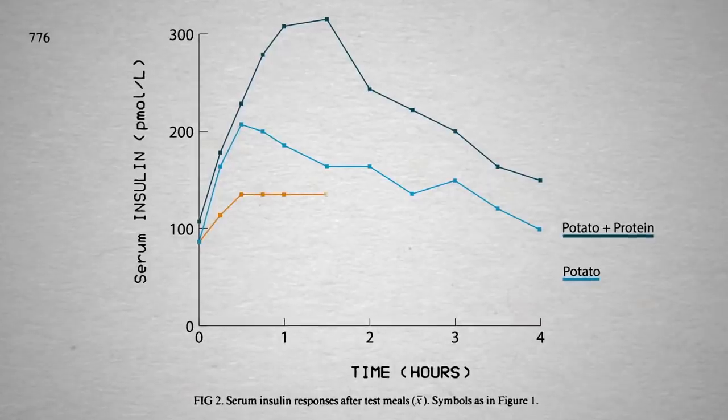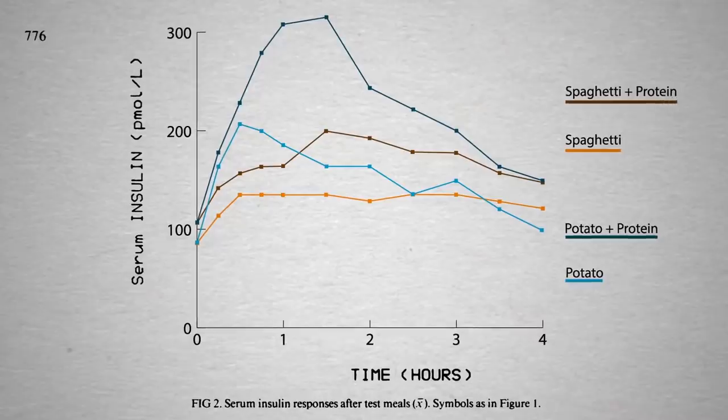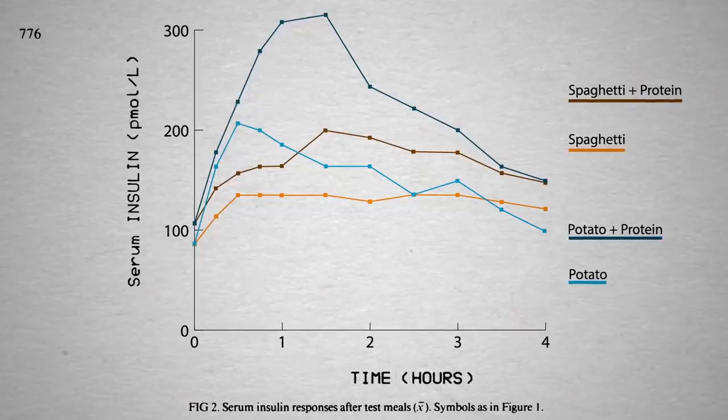Same with white flour spaghetti and white flour spaghetti with meat. The addition of animal protein may make the pancreas work twice as hard.